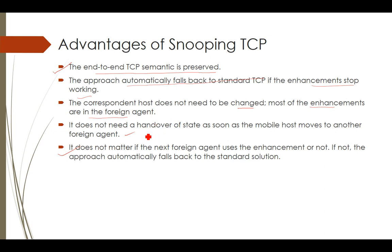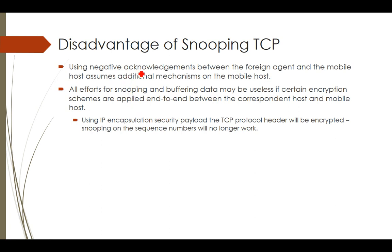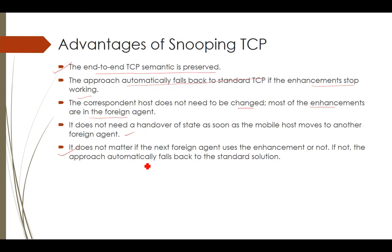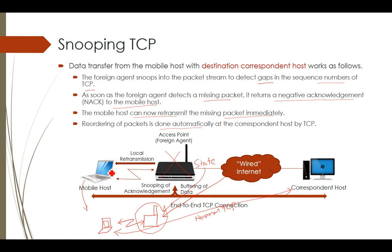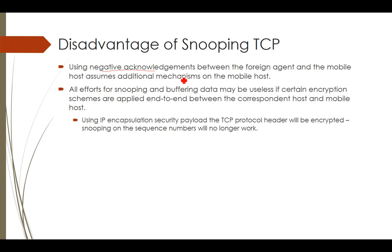Now the disadvantages. The first disadvantage is the use of negative acknowledgement. When the mobile host sends a packet that is not received properly, a negative ACK is sent from the foreign agent to the mobile host. The disadvantage is that using negative acknowledgement between the foreign agent and the mobile host requires additional mechanisms on the mobile host, since traditional TCP does not have the NAK mechanism. Additional compatibility mechanisms are needed for Snooping TCP.